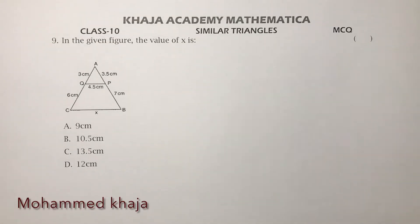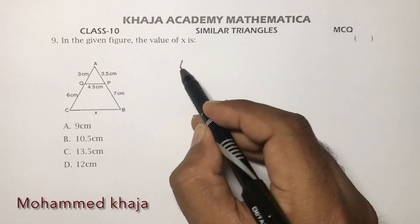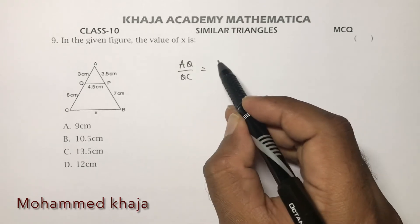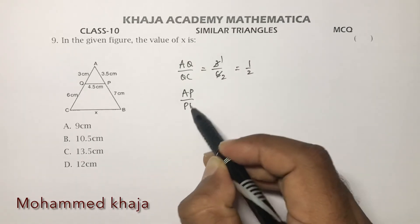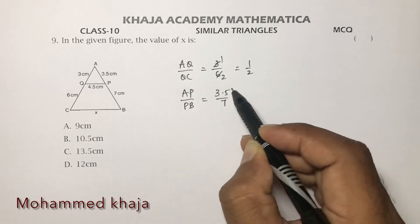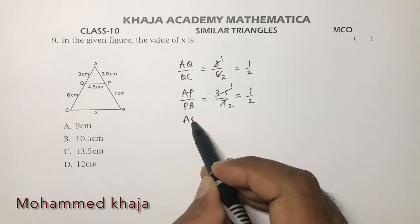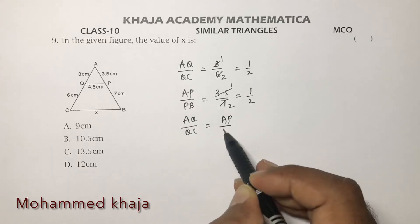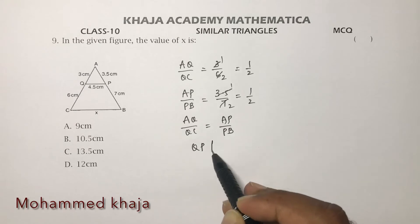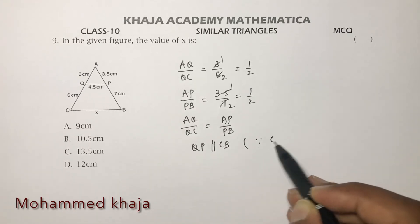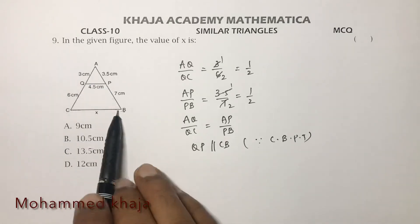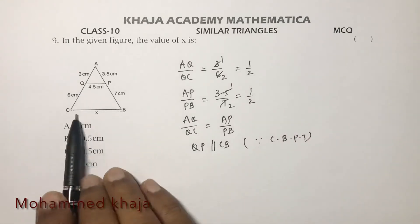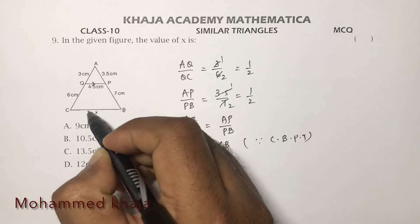New problem: in the given figure, find the value of X, which represents BC. We check: AQ/QC = 3/6 = 1/2, and AP/PB = 3.5/7 = 1/2. Since AQ/QC = AP/PB, by the converse of BPT (Basic Proportionality Theorem), QP is parallel to CB, because QP divides AC and AB in the same ratio of 1:2.